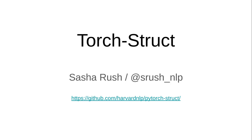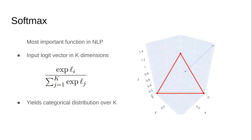Hi everyone, my name is Sasha Rush and today I'm going to talk about TorchStruct, a library for deep structure prediction. You can get all this code on the GitHub link below. I'm going to begin by reviewing the softmax function, one of the most important functions in modern natural language processing.